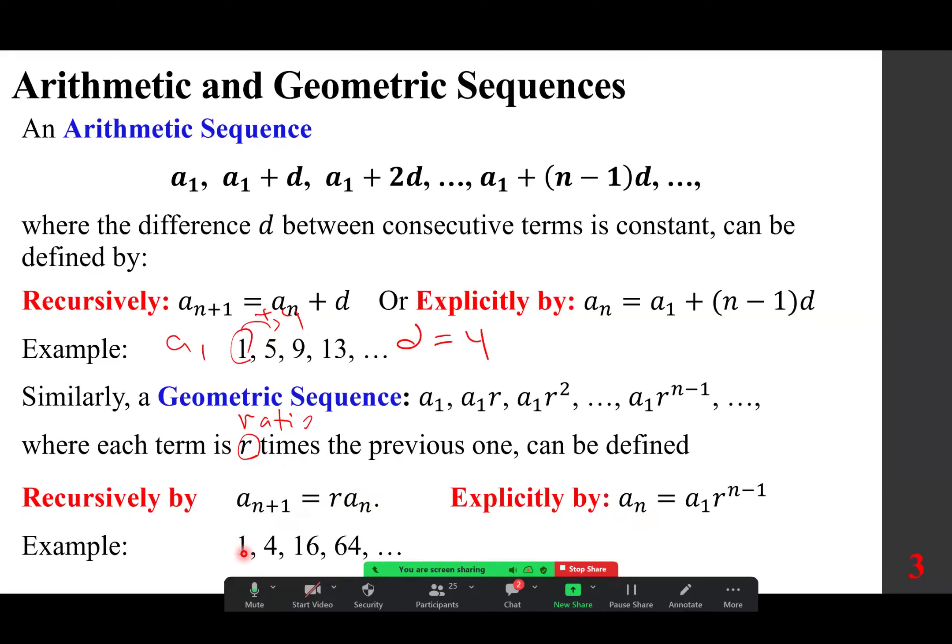Again, this is the first term, a sub 1, notice we multiply by 4, so r becomes 4. 1 times 4 is 4, 4 times 4 is 16, 4 times 16 is 64.